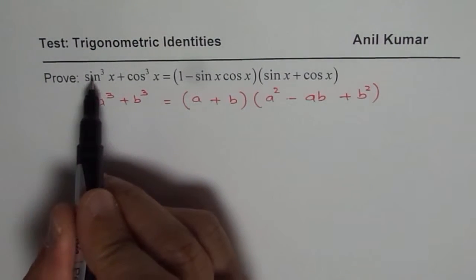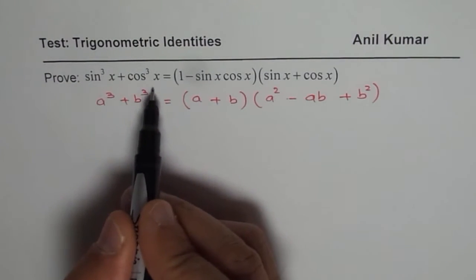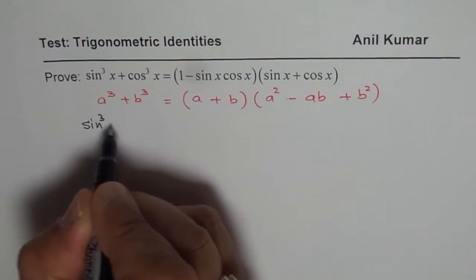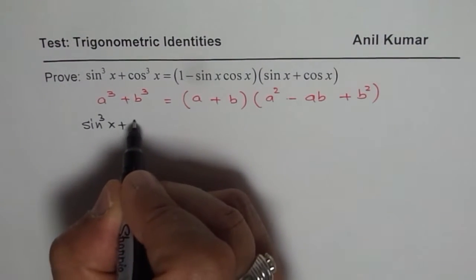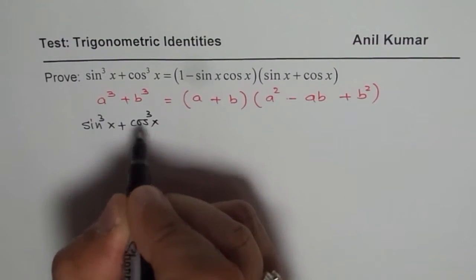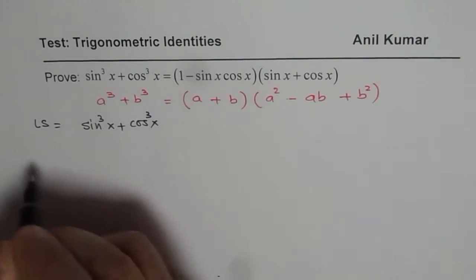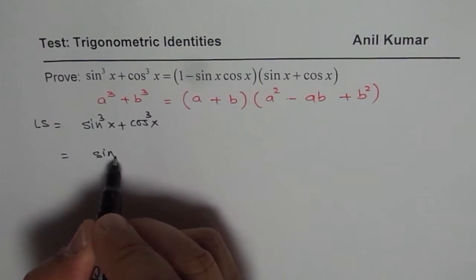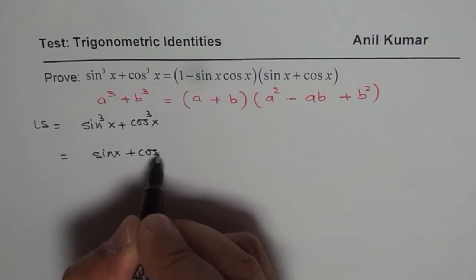In this case, a is sin x, b is cos x, right? So we could write sin³x + cos³x, which is our left side, as equal to (a + b), which is (sin x + cos x),